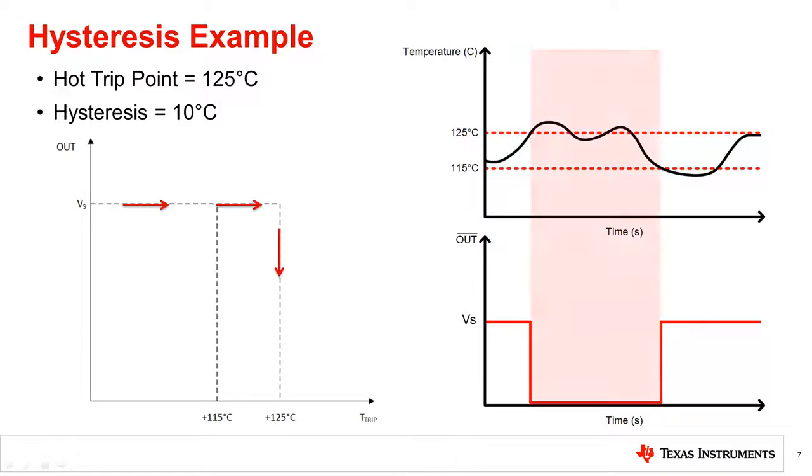After the trip point is reached, the output pin goes to zero. During this time, the alert is sent to the MCU and could trigger an event like a power down or turning on a fan.